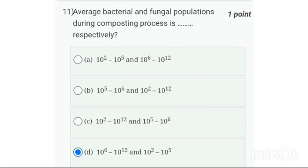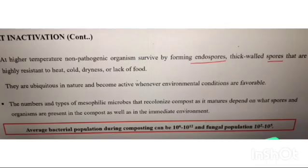Eleventh one: the average bacterial and fungal population is between certain ranges — it is usually between those ranges. The answer is option D.